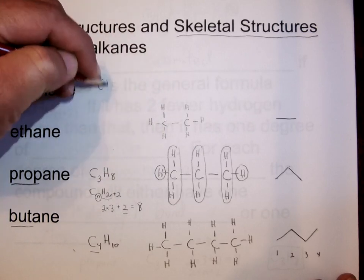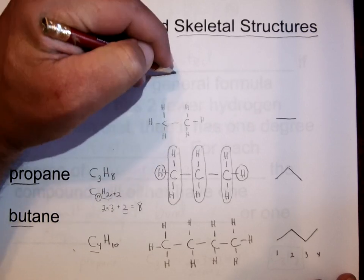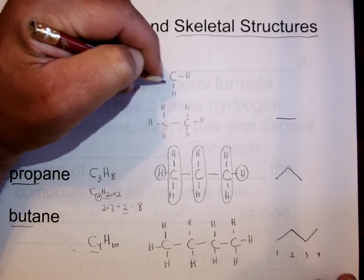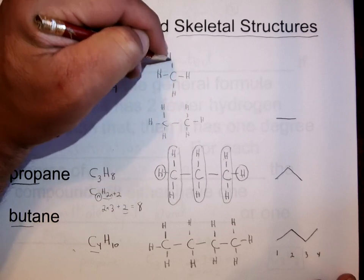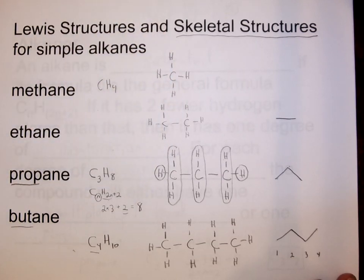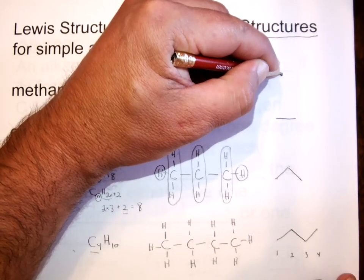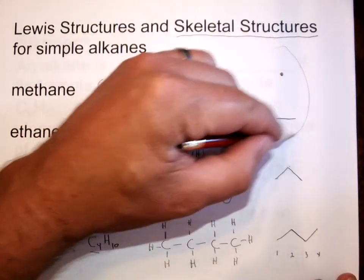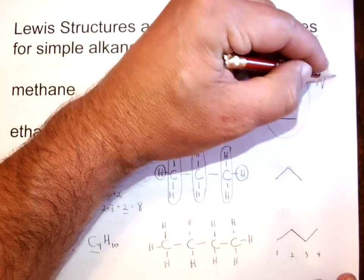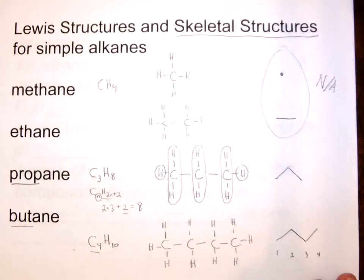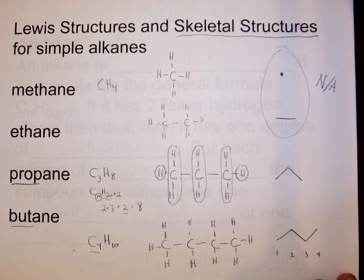For methane, CH4, carbon attached to four hydrogens. Again, very quick and easy to just do the Lewis structure for methane. I don't even know what a skeletal structure for that would look like. I guess just a dot because there's just one carbon. So usually for the very small molecules, you won't think about skeletal structures. But as you get to larger molecules, the skeletal structures will be much more commonly used and much more useful for writing out a large amount of information with very little time.